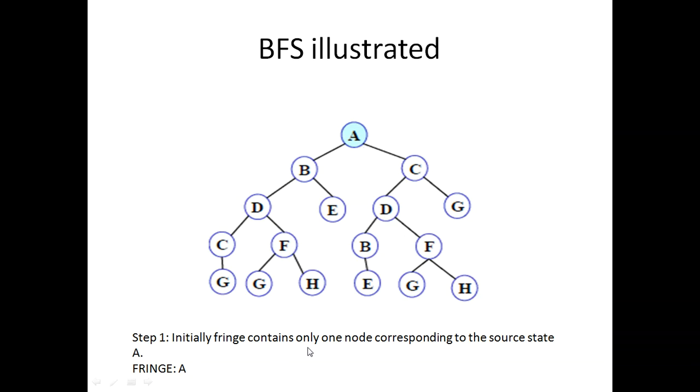Fringe is basically an open list that will have different nodes that we will use for placing the nodes, checking them, and generating their successors one by one. At first, we just placed the root node, that is A, in the fringe. Currently, the fringe is having A with it.